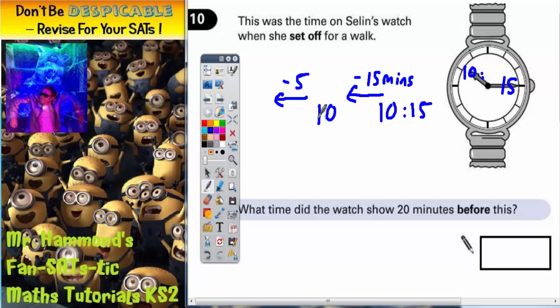So from 10 o'clock backwards 5 minutes is going to be 5 to 10, and 5 to 10 is otherwise known as 9:55. So your correct answer is 9:55.